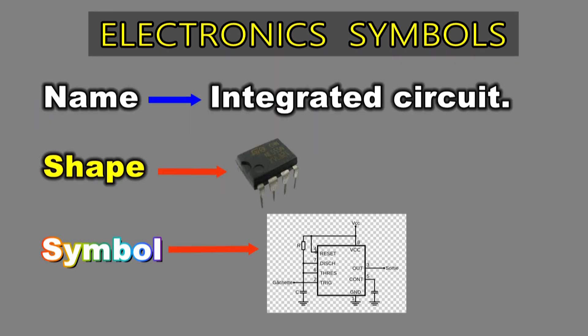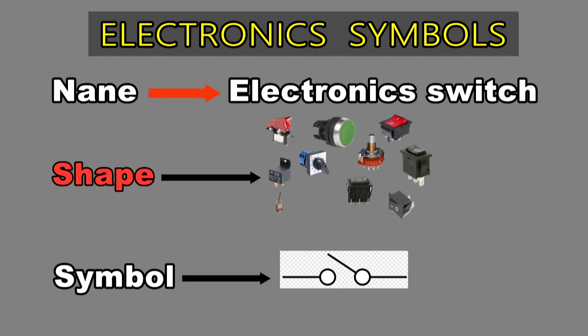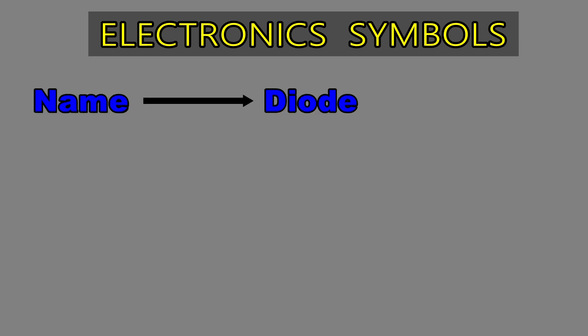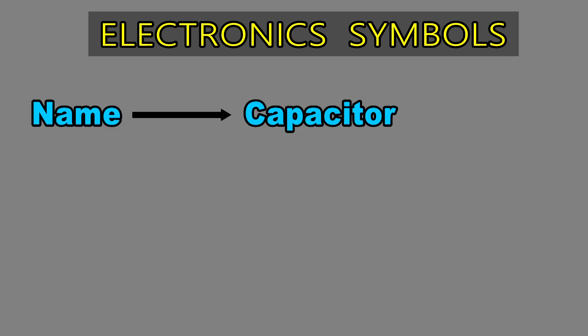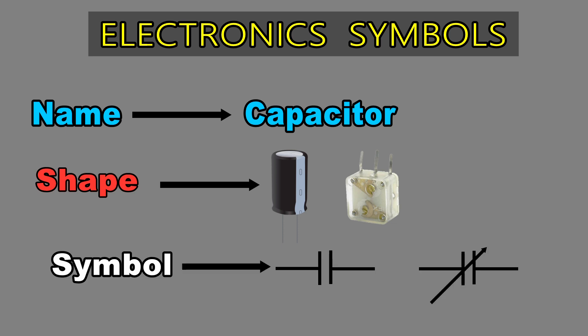If you want to create an electronics project, you can follow this video. A diode is a semiconductor device that essentially acts as a one-way switch for current. A diode is a specialist electronics component with two electrodes called the anode and the cathode. A capacitor is a device that stores electrical energy in an electric field.